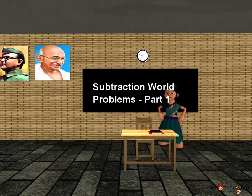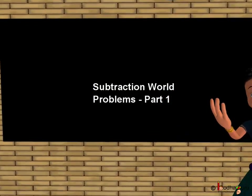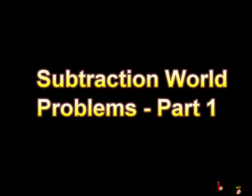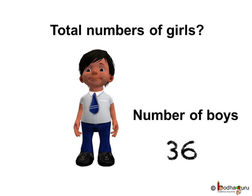Good morning children. Now you know how to subtract numbers. Let us see the usage of subtraction in our daily lives. In a class there are 78 students. Out of the total of 78 students there are 36 boys and the rest are girls. So how many girls are there?